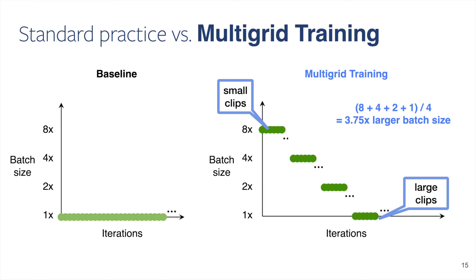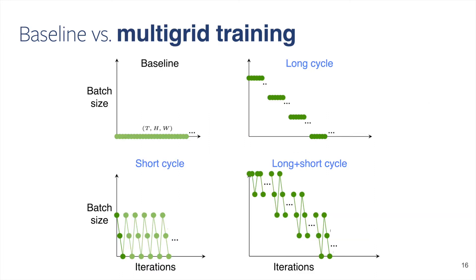Of course, this is just one instantiation of our multigrid method. We may, for example, use a different set of spatial or temporal sizes during training, or design a different schedule for using these shapes. We study these design choices in our paper.